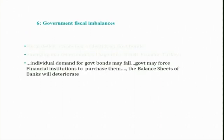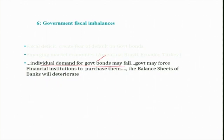As a result, when government fiscal imbalances happen and government borrowing increases with more and more bonds being supplied, individual demand for government bonds may fall. Individual investors and institutional investors will respond with a decline in demand for government bonds. The riskiness of government bonds increases and as we have seen, when riskiness of any particular bond increases its demand declines. Then the government may force financial institutions to purchase them.